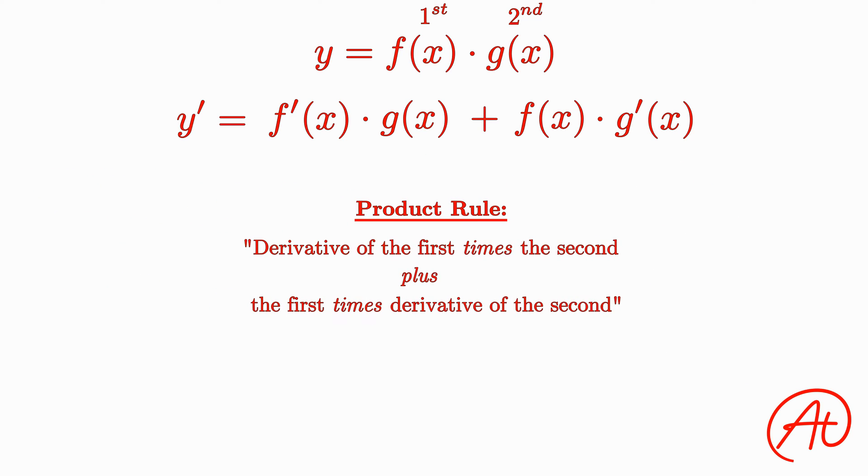In summary, although you can write the product rule in several different ways, it's good to be consistent. You'll never go wrong if you remember that the product rule is the derivative of the first times the second plus the first times the derivative of the second.